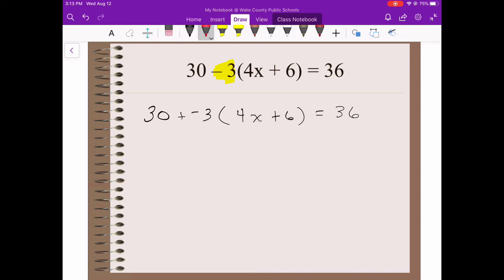I'm going to go ahead and distribute that negative 3 to both pieces, meaning I'm going to multiply. 30 was not affected, but now I've got negative 3 times 4x, which is negative 12x, negative 3 times 6, which is negative 18. What happens is people forget that negative and they don't end up getting both pieces negative there in that middle. 36 has not been affected, it's on a different side.